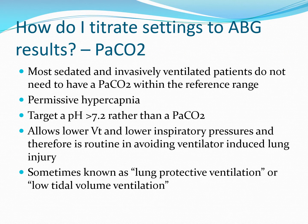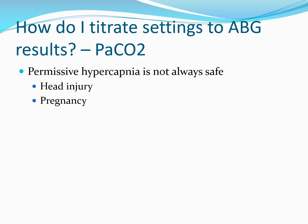How about titrating the settings on your ventilator to the results you're getting on your arterial blood gases? Let's look at CO2 first. Most sedated and invasively ventilated patients do not need to have a CO2 within the reference range. This is known as permissive hypercapnia, where we target a pH greater than 7.2 rather than any arbitrary figure of PaCO2. This allows us to use lower tidal volumes and lower inspiratory pressures, and is therefore a routine part of trying to avoid ventilator-induced lung injury — sometimes called lung protective ventilation or low tidal volume ventilation. However, permissive hypercapnia isn't always safe; CO2 should be kept much more tightly controlled and within reference ranges for patients with head injury and pregnant patients.